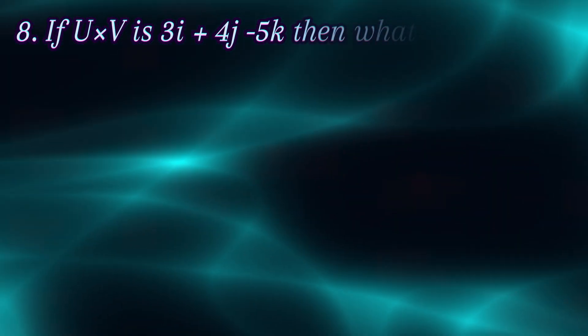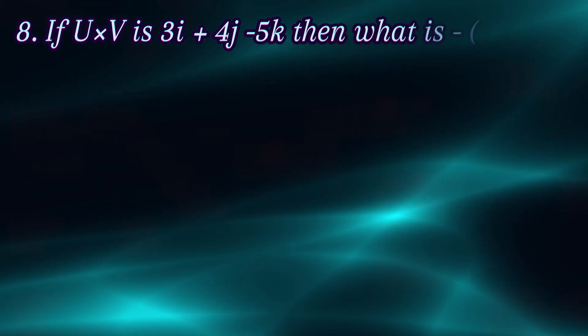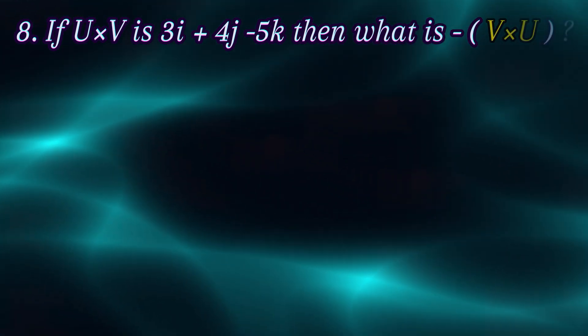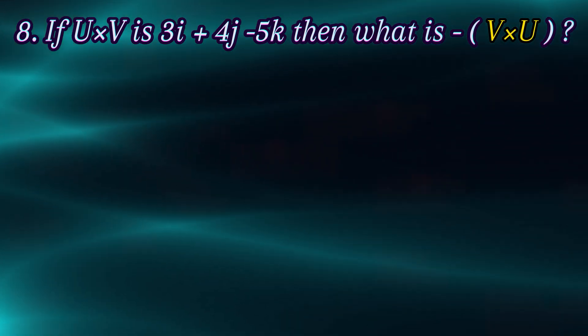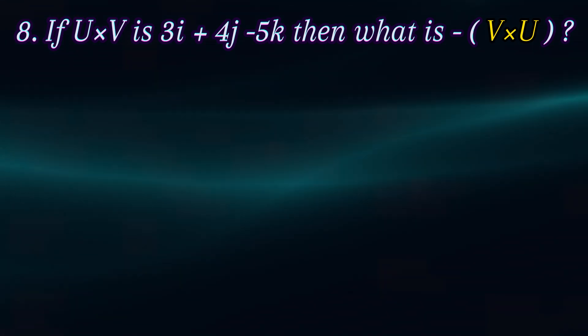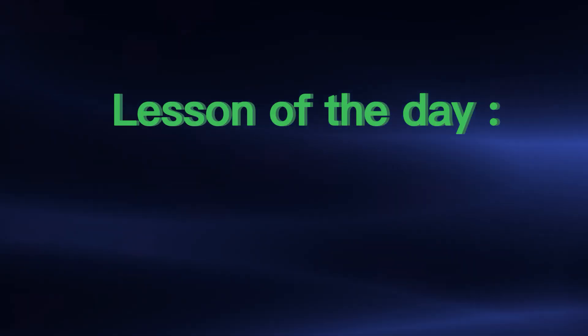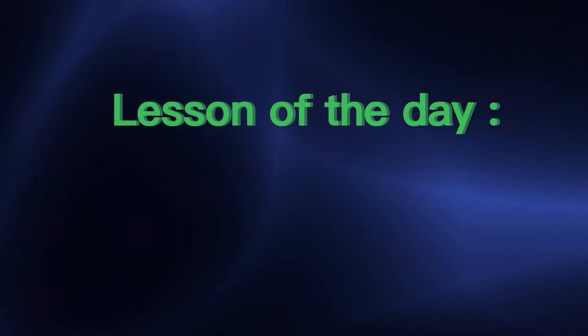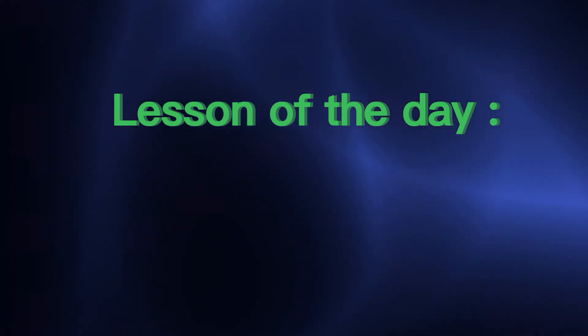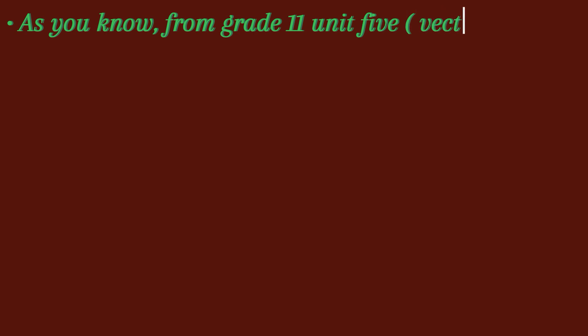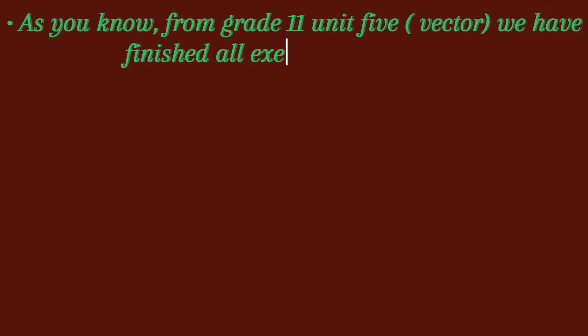If u cross product of v is 3i plus 4j minus 5k, then what is the negative of v cross product of u? This is from Unit 5, topic on vectors, exercise problems for Grade 11.